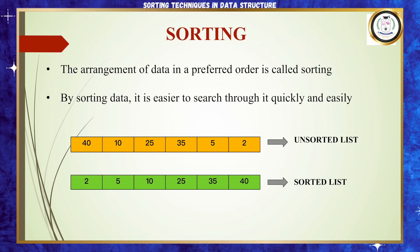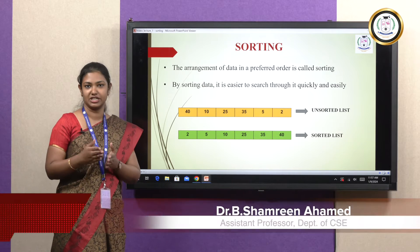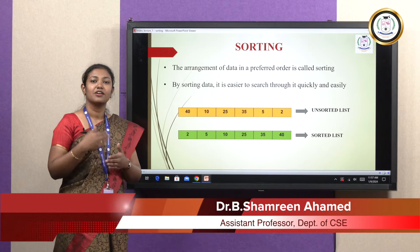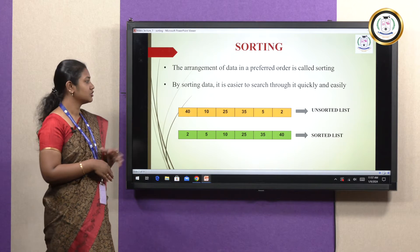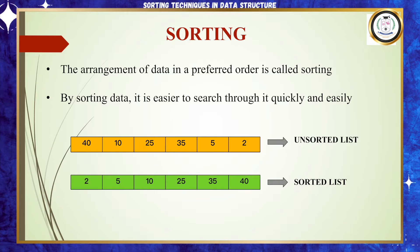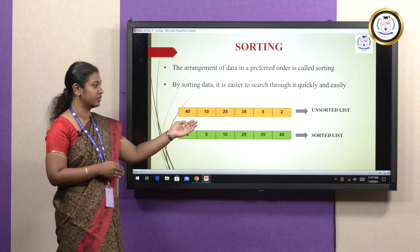So first let us see what is sorting. Basically when we are having a group of elements, we have to arrange them in some sorted order, so that when we are doing processes such as searching, it will become easier for us. Now let us see it with an example. In the first yellow column, we have certain elements which are 40, 10, 25, 35, 5 and 2 — in an unsorted order.